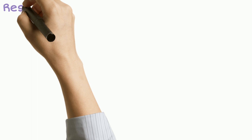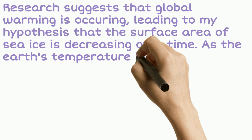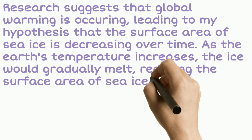Now we can put these ideas together and add research to support them. Research suggests that global warming is occurring, leading to my hypothesis that the surface area of sea ice is decreasing over time. As the earth's temperature increases, the ice would gradually melt, reducing the surface area of sea ice. Further, I expect that the surface area of sea ice is likely to be highest in winter when the sea and air temperatures are at their lowest.